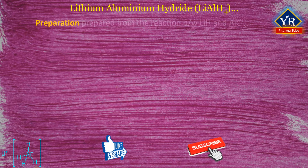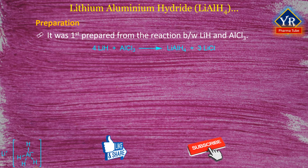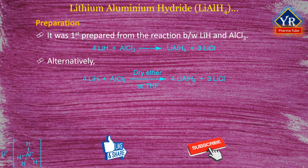Lithium aluminium hydride was first prepared from the reaction between lithium hydride and aluminium chloride. Alternatively, the reagent is prepared by slowly adding a calculated amount of anhydrous aluminium chloride to a paste of lithium hydride in dry ether or tetrahydrofuran. Precipitated lithium chloride and unreacted lithium hydride are removed by filtration. The filtrate is evaporated in the absence of air and carbon dioxide, when lithium aluminium hydride is obtained as a gray solid.